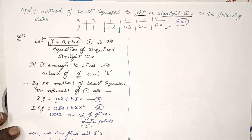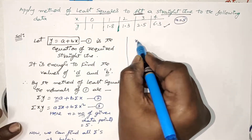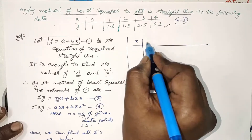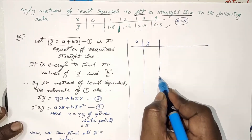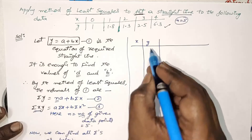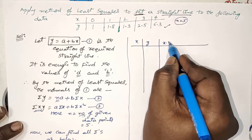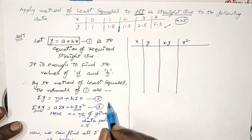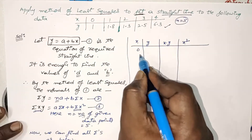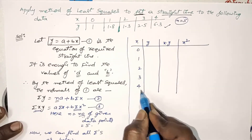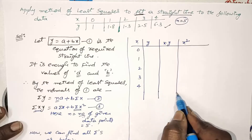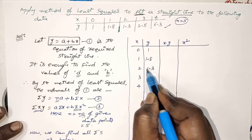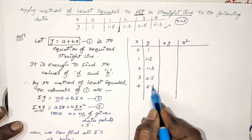I will use a tabular form. The first column is x values, the second column is y values. Next, we need to find σxy, so multiply x and y values in the third column. We also need σx², so square the x values in the fourth column. The x values are 0, 1, 2, 3, 4, and the y values are 1, 1.8, 1.3, 2.5, and 6.3.